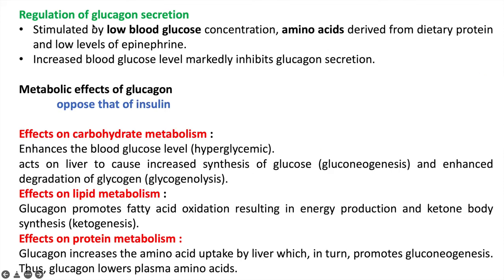Regarding regulation of glucagon secretion: whenever there is low concentration of glucose in blood, low concentration of amino acids, and low level of epinephrine, glucagon secretion occurs. Whenever there is high concentration of blood glucose, inhibition of glucagon secretion occurs.